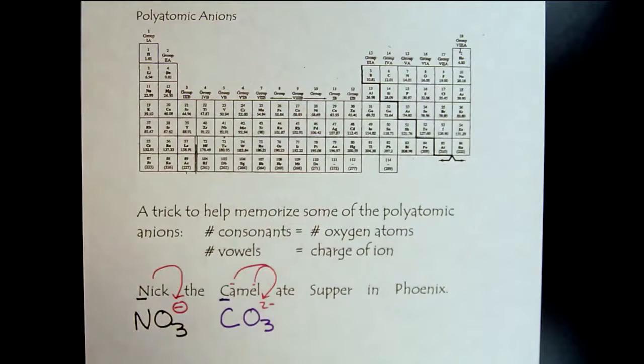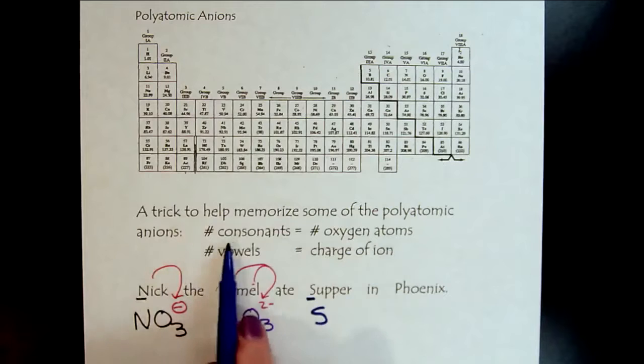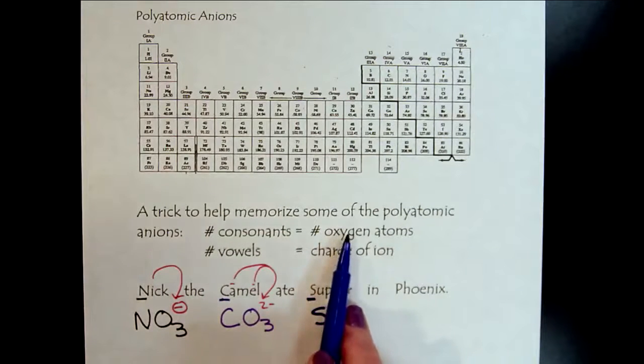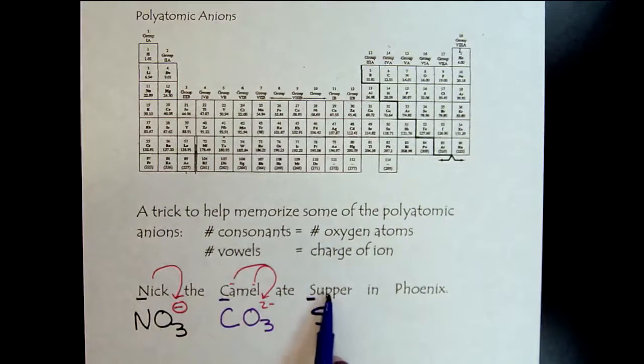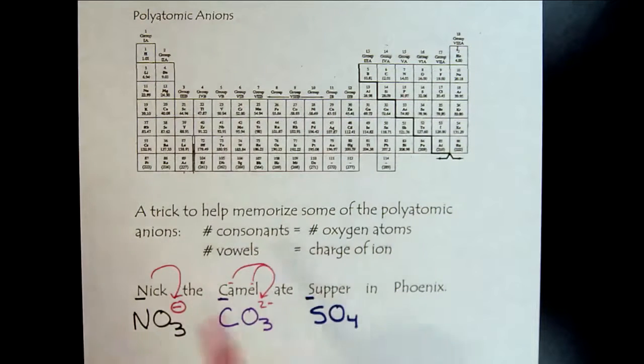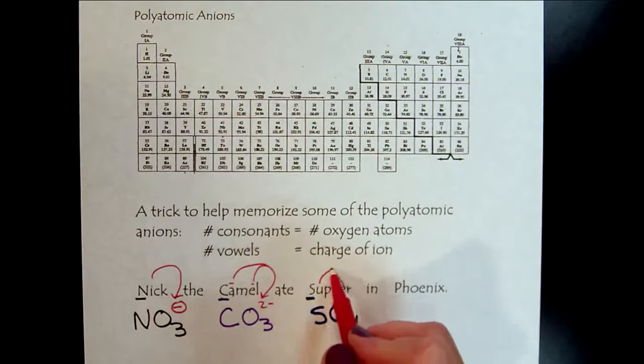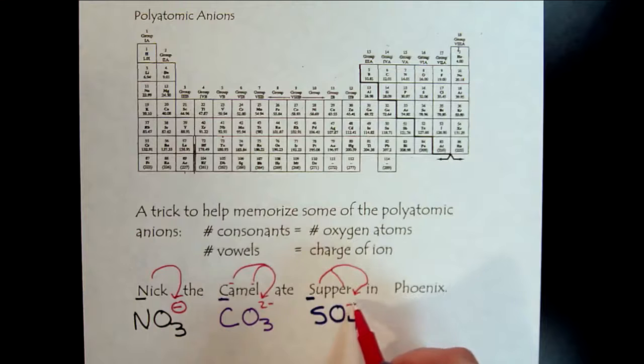So Nick the camel ate supper. So the supper, that'll be our sulfate. So there's our sulfur. The number of consonants equals the number of oxygen atoms. One, two, three, four. Four oxygen atoms. And then the number of vowels, the charge. So there's one, two vowels, minus two.